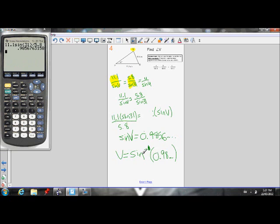Inverse sine of 0.98 and so on. We're going to use that whole number. We're not going to round it because we want our answer to be as accurate as possible. Never round before you get to your final answer.